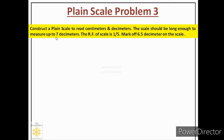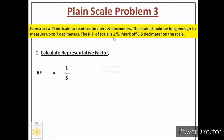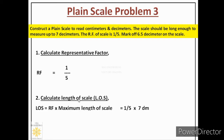We have to construct a scale which can measure up to 7 decimeters. Whenever we solve any problem on scales, we first do the calculation of representative fraction. In this question, RF is already mentioned as 1/5. So RF equals 1/5. Next step is to find the length of scale. The formula is RF multiplied by maximum length of scale. RF is 1/5 and maximum length is 7 decimeters. Converting decimeters into centimeters by multiplying by 10, we get the length of scale as 14 centimeters.